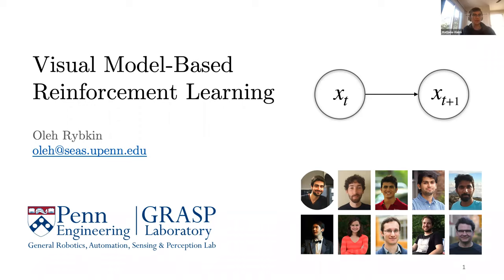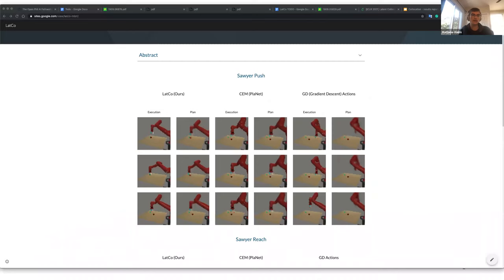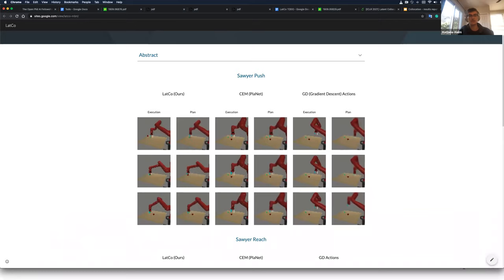Hello everyone, and welcome back to GRASP's Student Faculty and Industry Talk Series. This week I'm excited to introduce our second GRASPie of the semester, Ola Ribkin. He's a third-year PhD student in CIS, working with Professor Kostas Danilidis. Before coming to GRASP, he was a student at the Czech Technical University in Prague, where he earned his bachelor's in CS and was awarded the Dean's Outstanding Thesis Award.